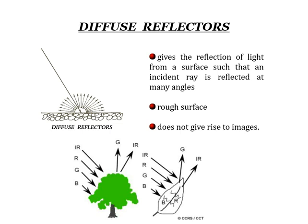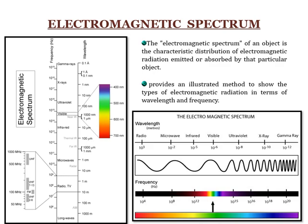Diffused reflectors give reflection of light from a surface such that incident rays are reflected to many angles. In a specular reflector, the angle of incidence equals the angle of reflectance, whereas in diffused reflectors, when a light ray is incident upon the surface, it gets diffused into various directions. Diffused reflectors give a rough surface and do not give clarity in images. The best example of diffused reflectors are trees, where incident energy is reflected back in various directions.